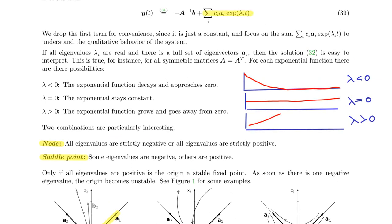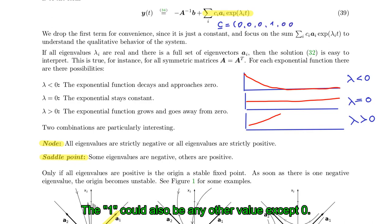This solution points in the direction of exactly one eigenvector if all but one ci are zero. So the vector of weighting factors could be zero, zero, zero, one, zero, zero. And then the solution would point in the direction of the fourth eigenvector and there is no contribution of the other eigenvectors.